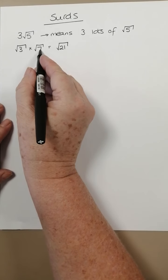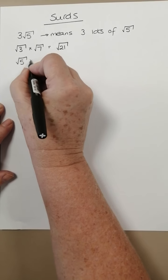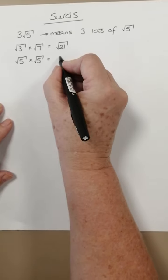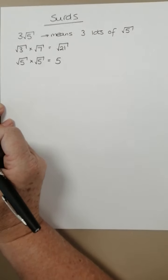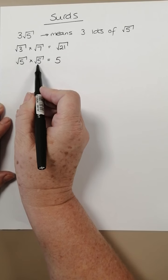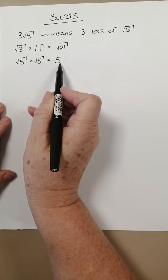If the numbers inside the square root are the same, so root 5 times root 5, then the answer just becomes the number itself. Because if we did root 5 times root 5, that would be the square root of 25 and the square root of 25 is 5.